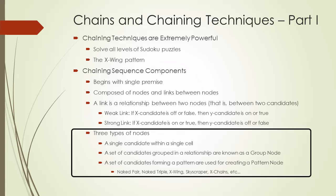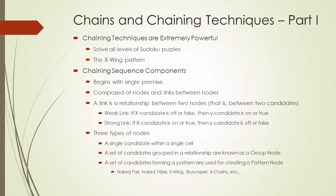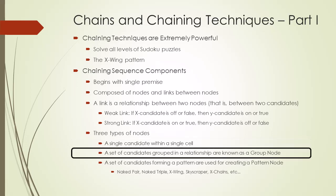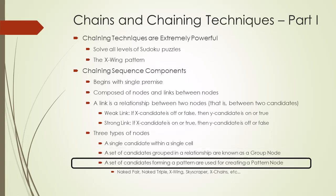There are three types of nodes in a chaining sequence. The first and most common type of node is a single candidate within a single cell. The second type of node is a group of candidates in different cells acting like a single node in a relationship. The third type of node is a set of candidates in different cells forming a pattern, which is then used as a node in a relationship — usually as a strong link to eliminate other candidates.